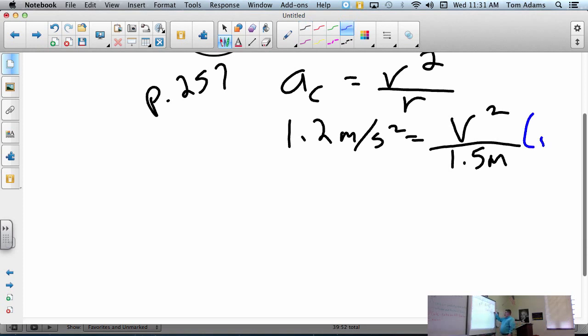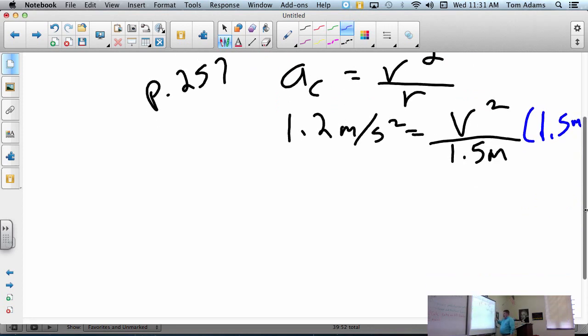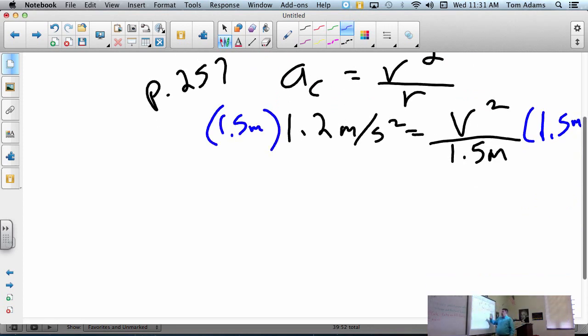You've got it. We're going to multiply by 1.5 meters. Whoops. On both sides. And so, what's 1.5 times 1.2? Somebody want to tell me? I'll reach there. Ready, set, go. 1.5 times 1.2.